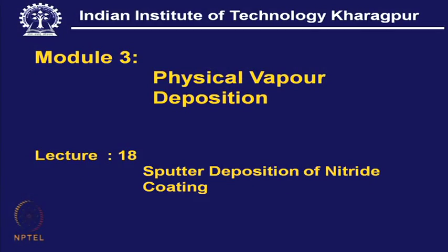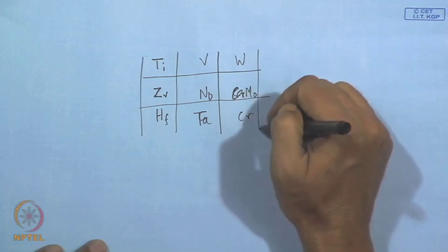These nitride coatings are well known for their extraordinary hardness, wear resistance, anti-welding property, and so on. They are extremely good candidates for all sorts of mechanically functional surfaces. The whole idea of this topic is how to deposit these nitrides of transition elements by sputtering.